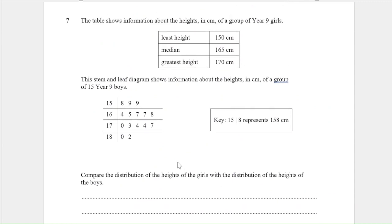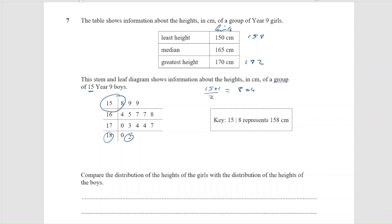Question 7. The table shows information about the heights in centimetres of a group of Year 9 girls — least height, median height, greatest height. A stem-and-leaf diagram shows information about the heights of a group of 15 Year 9 boys. Compare the distributions. I'm going to find the same information for the boys: least height is 158, greatest height is 182. The median for 15 values is in the 8th position, so the median for the boys is 168.